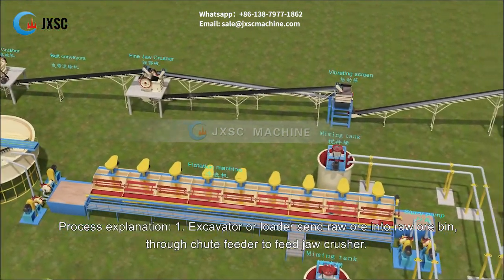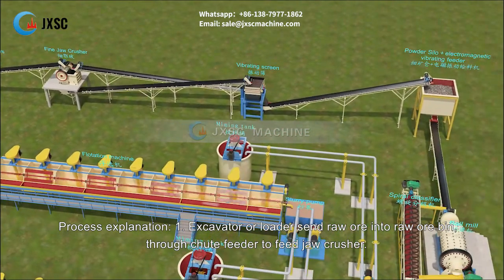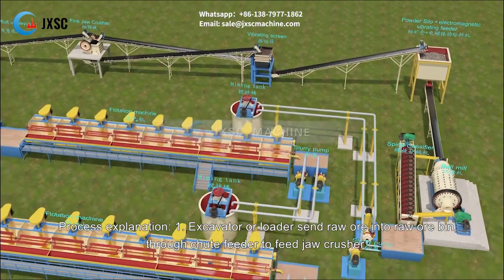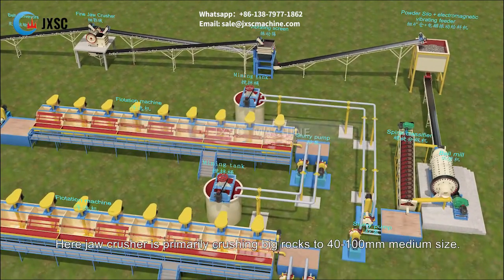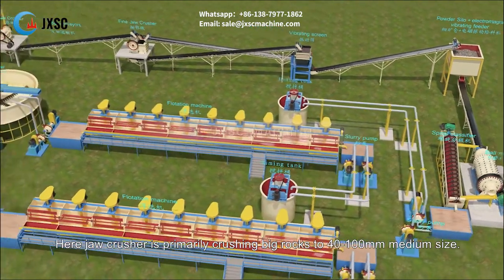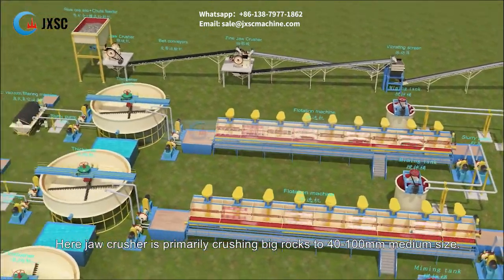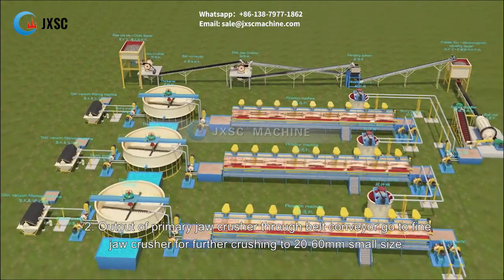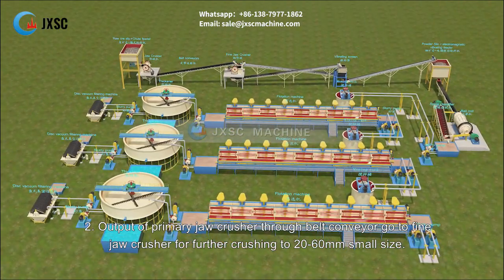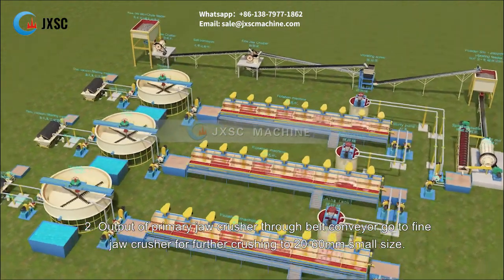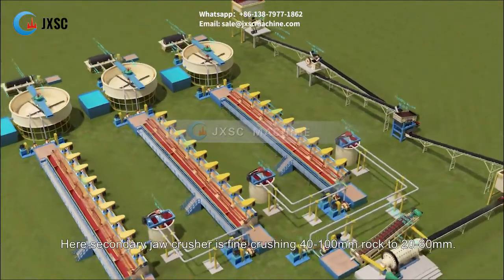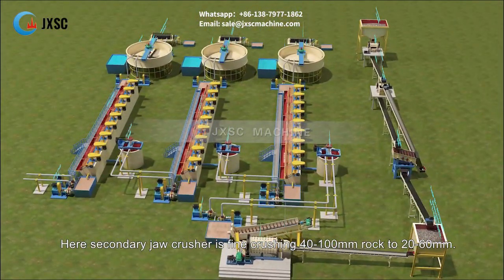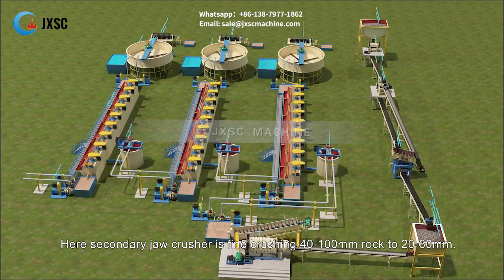Process explanation: An excavator or loader sends raw ore into the raw ore bin, then through a chute feeder to feed the jaw crusher. The jaw crusher primarily crushes big rocks to 40 to 100 mm medium size. Output then goes via belt conveyor to the fine jaw crusher for further crushing to 20 to 60 mm small size.